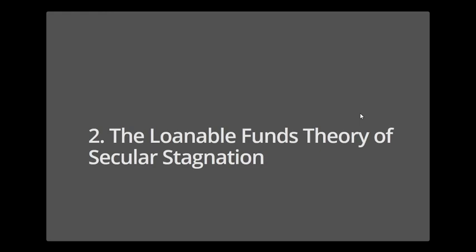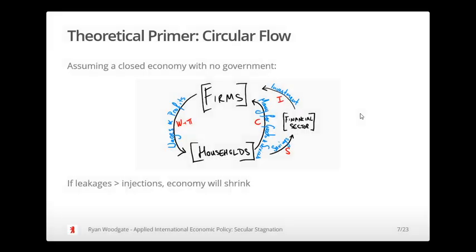The first theory we're going to look at is the mainstream theory — the most popular account of why secular stagnation is happening — and this is what is called the loanable funds theory of secular stagnation.